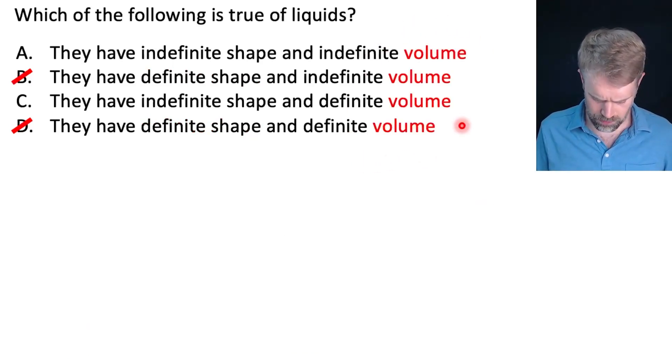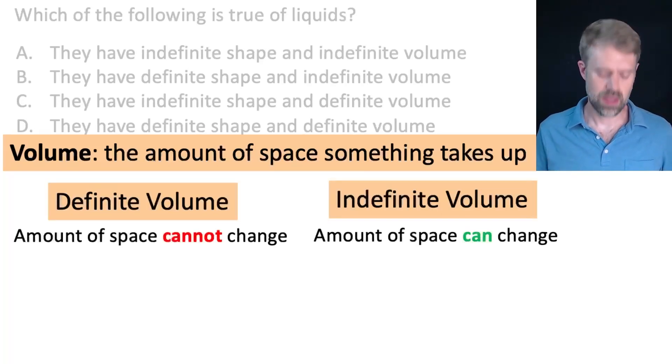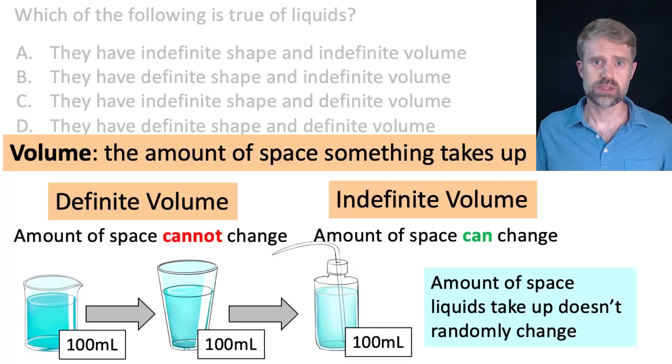Next, what about volume? Well, first off, volume is the amount of space that something takes up. Something has a definite volume if the amount of space it takes up cannot change. And something has an indefinite volume if the amount of space that it takes up can change. So, how about the volume of liquids? Well, the amount of space they take up, does it just randomly change? No.